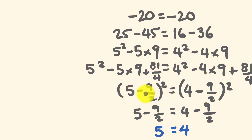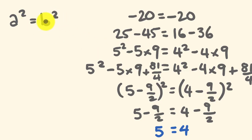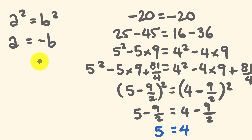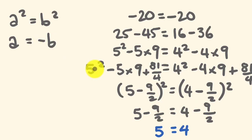What I have is a squared equal to b squared. The problem is that this is only true if a is equal to negative b. You have to be very careful when taking the square root of both sides of an equality. At this step, I assumed a equals b — both positive — but that is not the case.